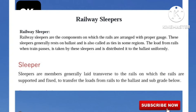What is the railway sleeper? Railway sleepers are the components on which the rails are arranged with proper gauge. The sleeper generally rests on ballast and is also called ties in some regions. When a train passes, the load from the rail is taken by these sleepers and is distributed to the ballast uniformly. Sleepers are members generally laid transverse to the rail, on which rails are supported and fixed to transfer the load from rails to the ballast and subgrade below.